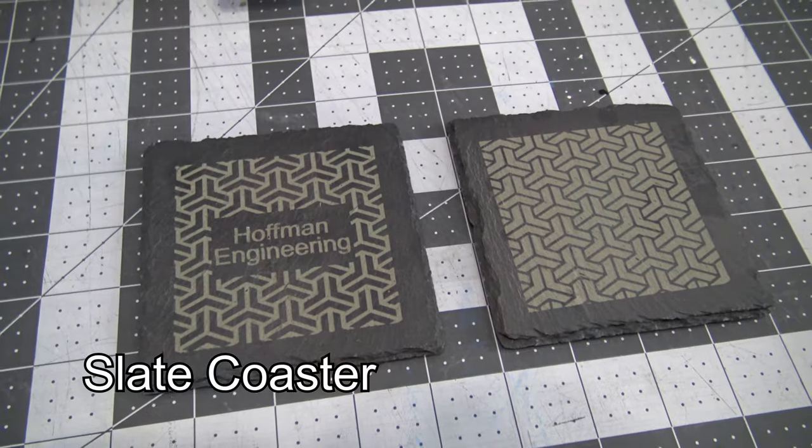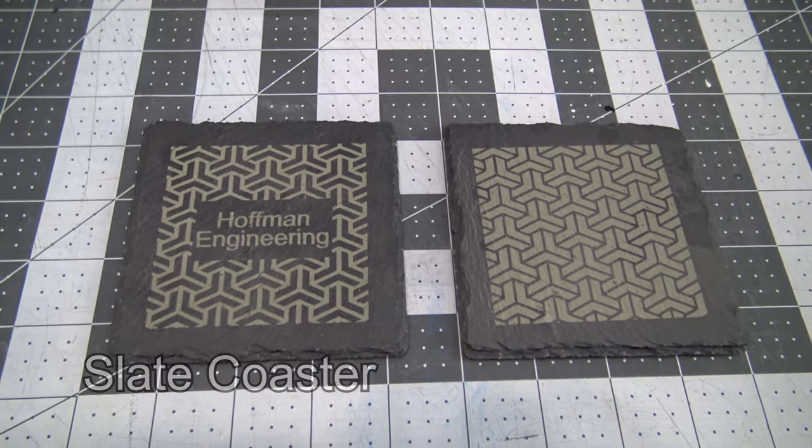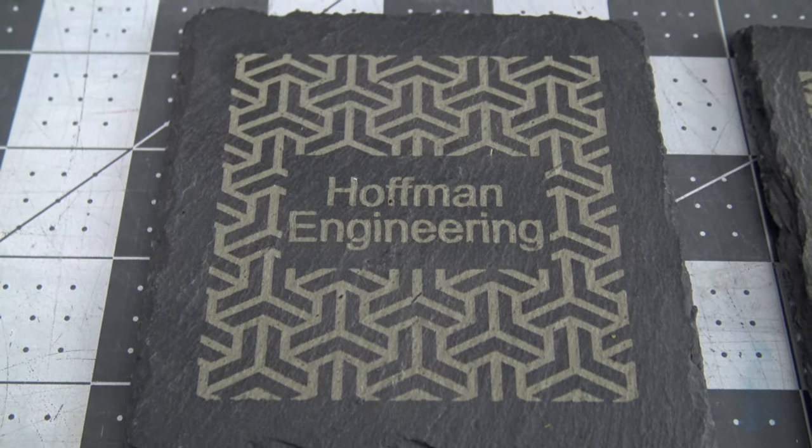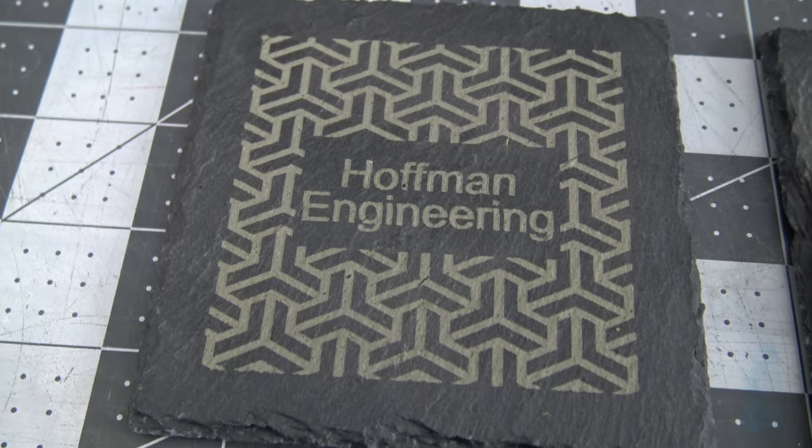Dark slate coasters are a favorite for diode lasers. I was happy with how they turned out on the CR Laser Falcon. It had no issues with the bitmap image of the geometric background, and the edges of the text are nice and crisp.